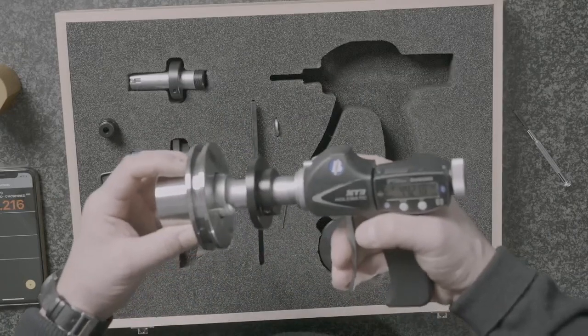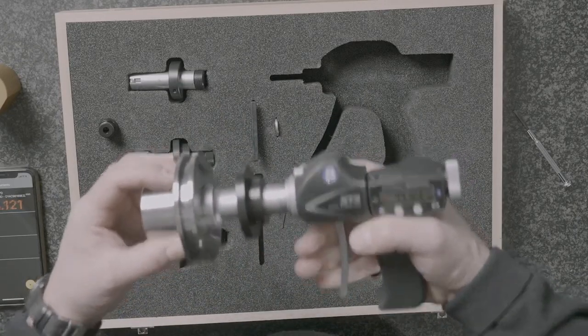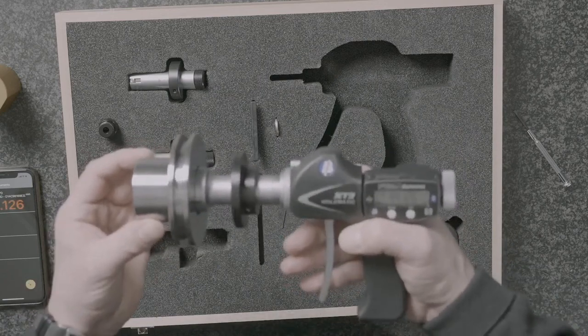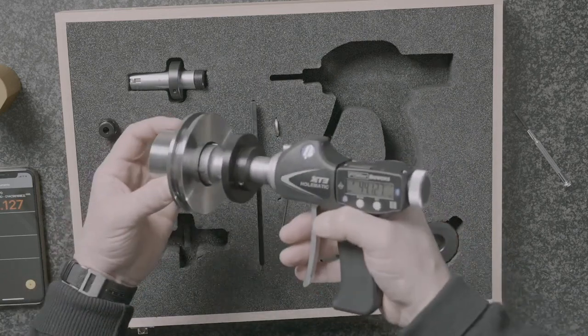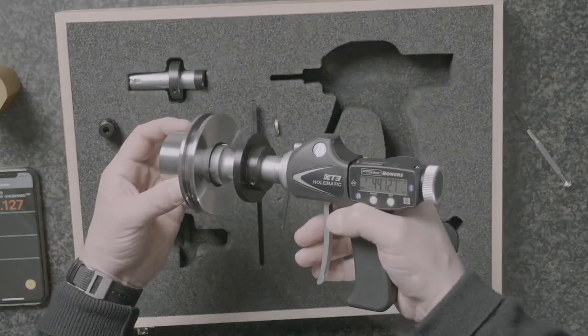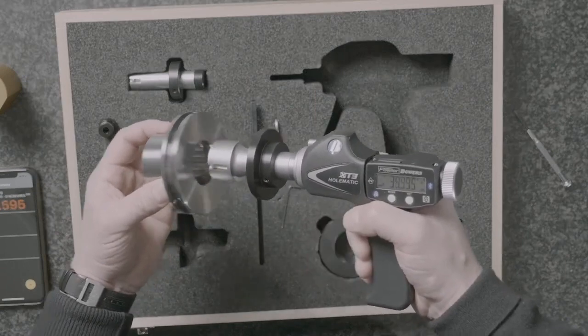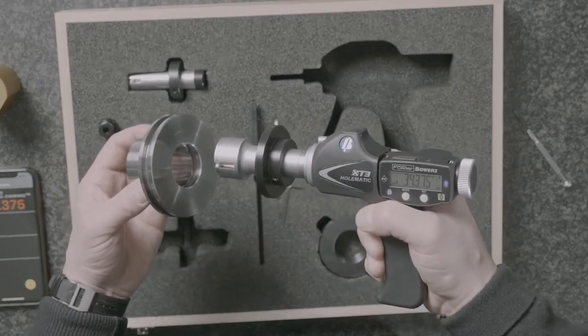And I'm just going to take the pressure off and just allow the part to square up using the front face of those anvils. Now I've got a nice repeatable result. And then in this case, I can retract the anvils. I've got my data measurement there.